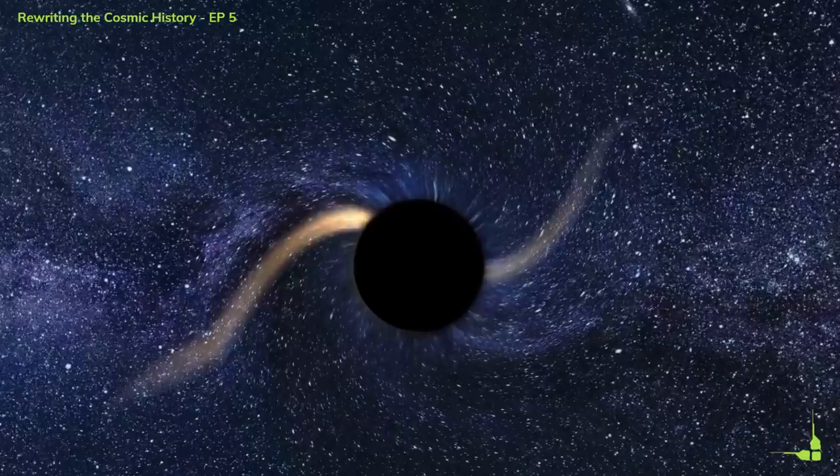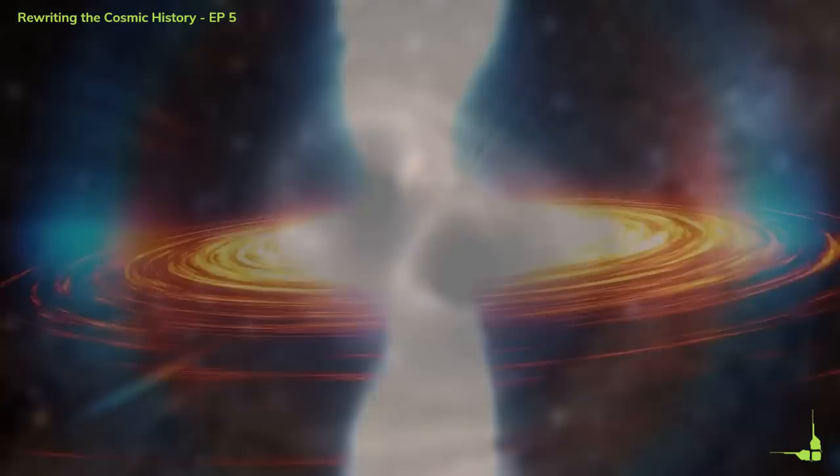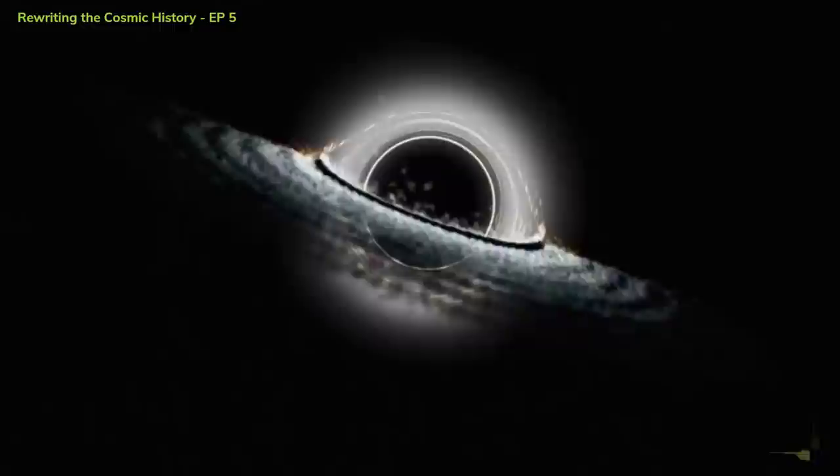Black holes are regions of space where gravity is so strong that nothing can escape, not even light. They are formed when massive stars die and collapse under their own weight, or when dense matter clumps together under extreme conditions. These black holes can grow by accreting matter from their surroundings, or by merging with other black holes. But how did some of them become so massive and powerful in such a short time?